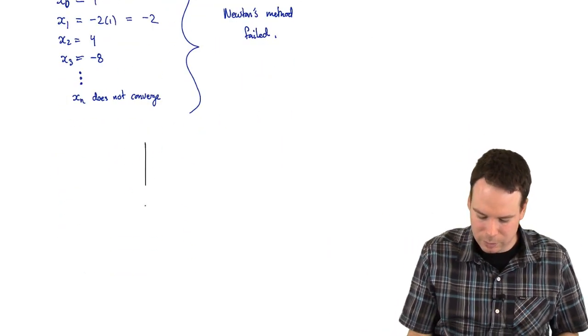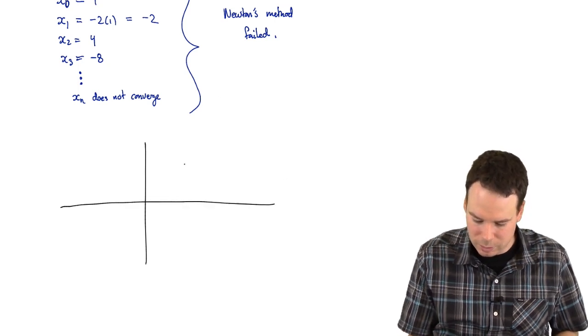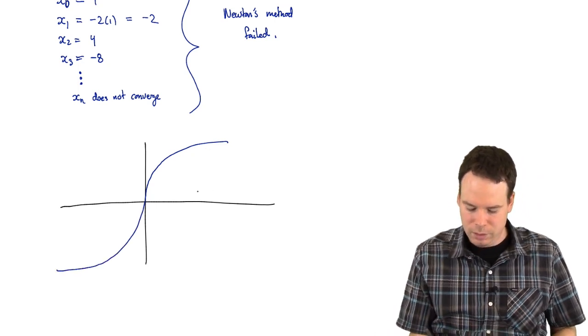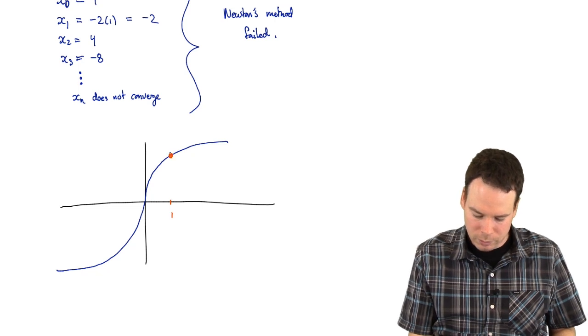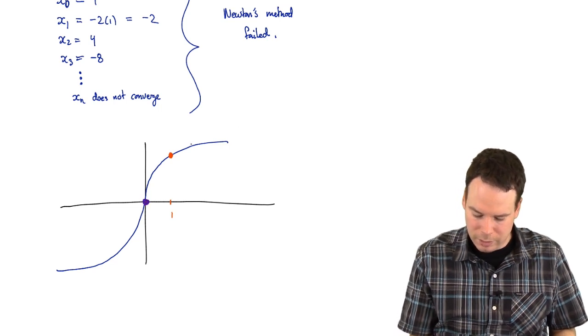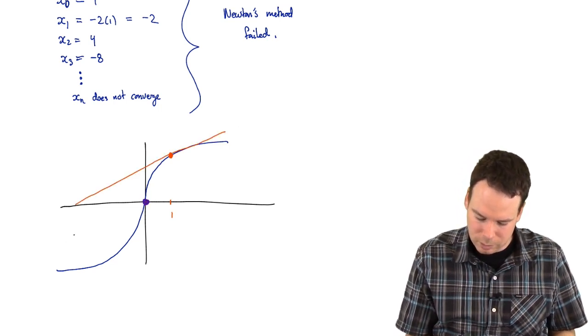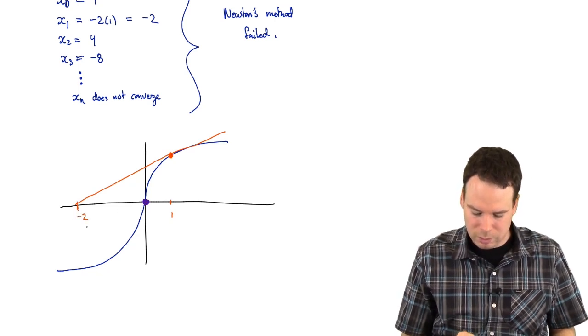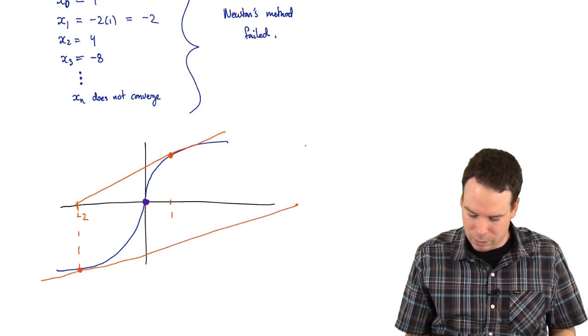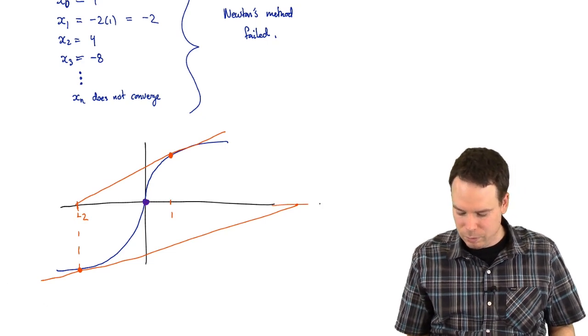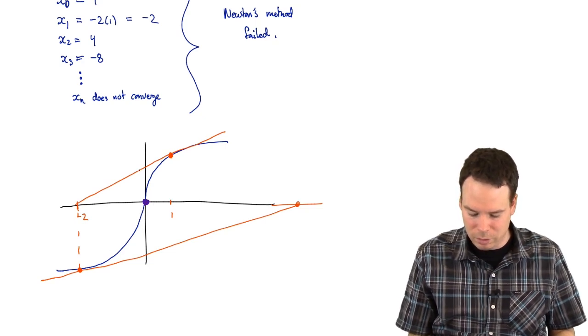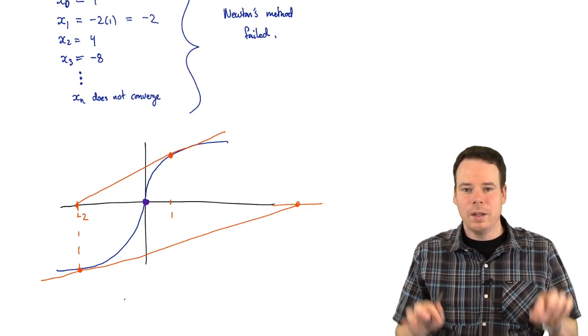So the picture for what's going on here really looks something like this. We have our function x to the one-third, which looks like this. We take any initial guess. Here we took one. There was our initial guess. Our root's there, the origin, that's what we're trying to hone in on. So there's our root at the origin. And from our initial guess, we construct the tangent line, gets us out here. And if that was one, then as we saw, this is going to be negative two. And then we come down here, take its tangent line, and then go up and take its tangent line. And every time we do this, we keep getting values that are farther and farther away from our actual root. So due to the shape of this graph and the fact that we're using these tangent lines to get our next approximations, things are going away from the root. Just something to be aware of that these examples exist.